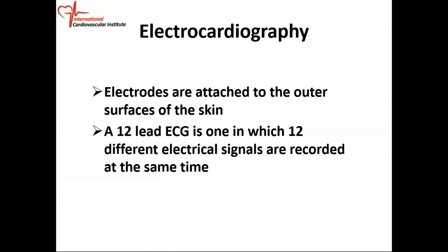When we do an EKG, we put electrodes on the outer surface of the skin — on the chest where the heart is located and on the limbs as well. These are small sticky electrodes attached to the surface of the skin. We talk about the 12-lead ECG, where we get 12 different electrical signals. We only put on 10 leads but we get 12 electrical signals.